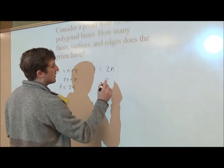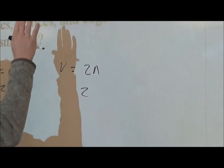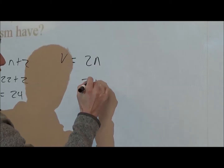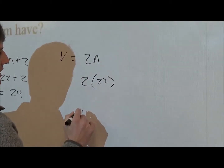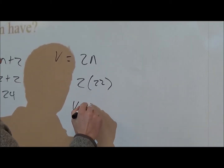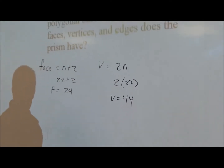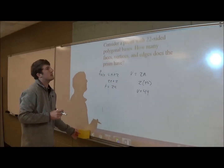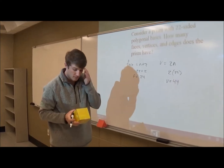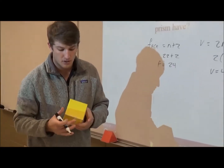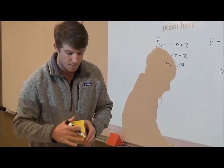A rule that can be applied to any number of sided prism for vertices is 2n. So if we look at the formula again, 2 times — this is a 22-sided prism — so 2 times 22, it's going to give us the vertices equaling 44.